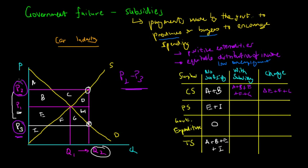By the same token, producers are producing at price P2. Every producer willing and able to produce at a cost less than P2 will produce cars. So with the subsidy, the total producer surplus is now B plus C plus E plus I, and the change in producer surplus is B plus C. This encourages more production in the car industry and therefore creates more jobs, which is the ultimate goal for the government.